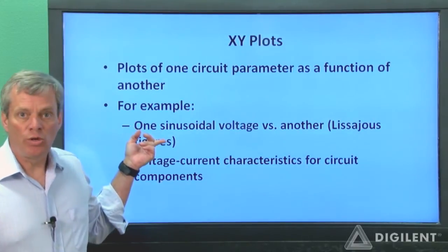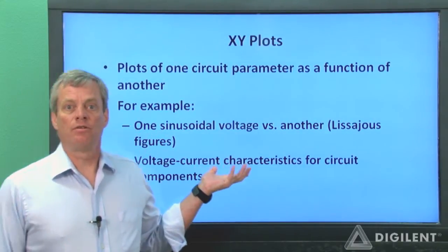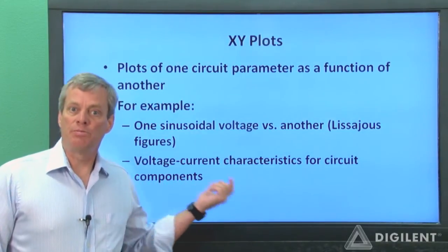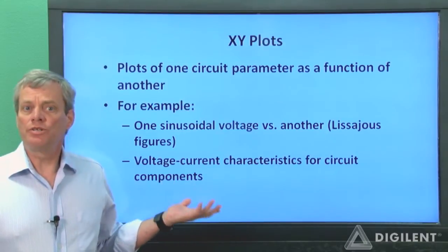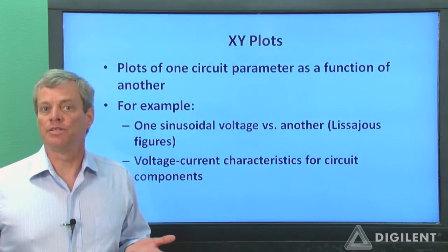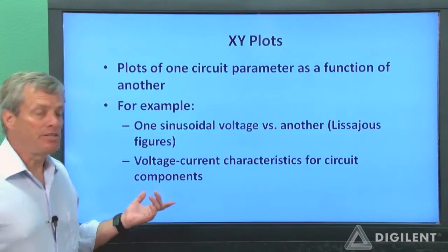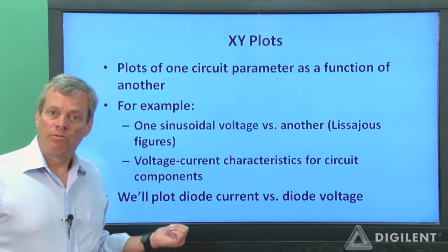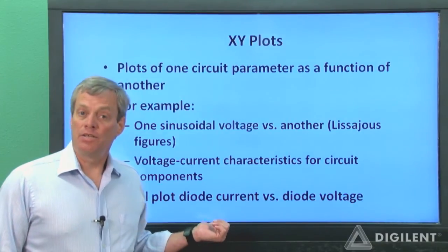Plotting one sinusoidal voltage signal versus another creates something called a Lissajous figure. These figures can be used to determine relationships between the two sinusoids, which are considerably more difficult to determine from the individual sinusoidal signals as a function of time. Another example is the voltage-current characteristic I mentioned previously. We'll plot a voltage-current relationship for our LED in this project.